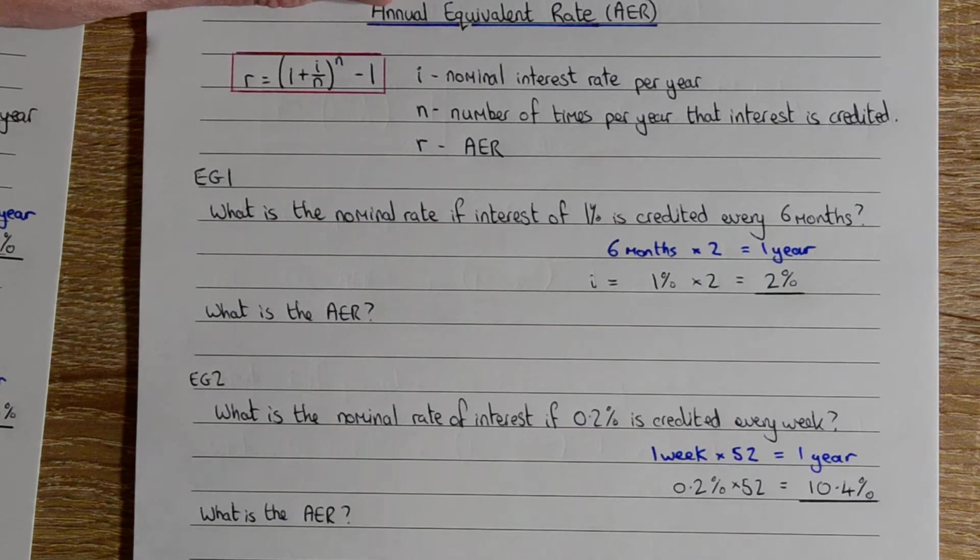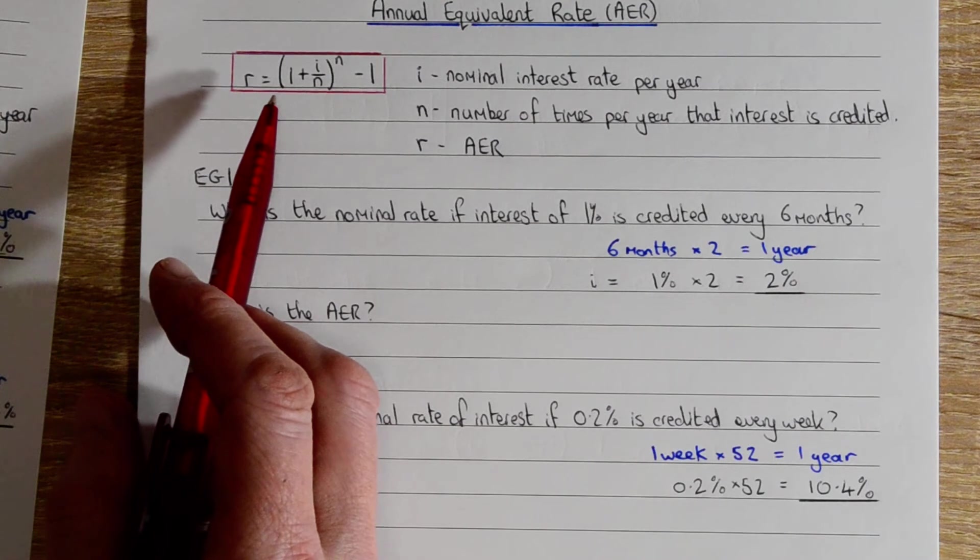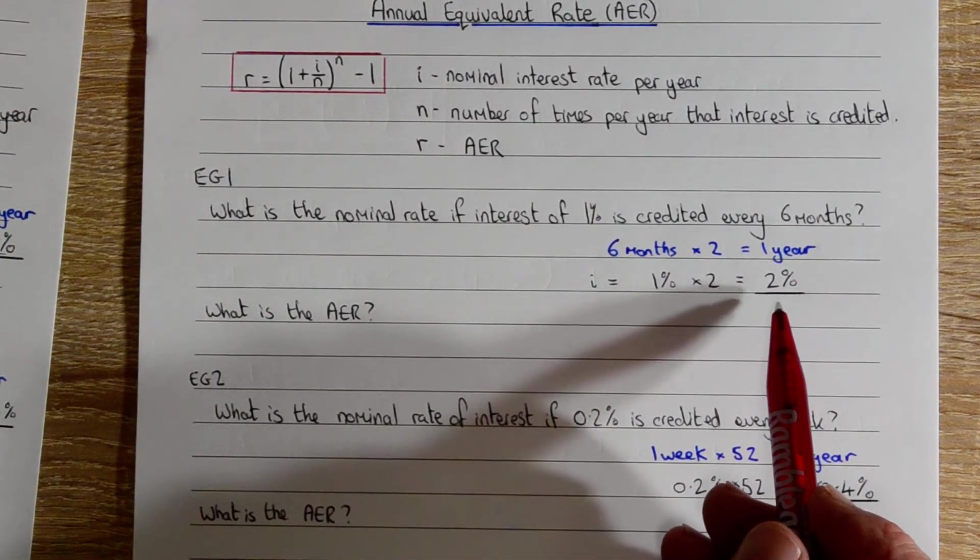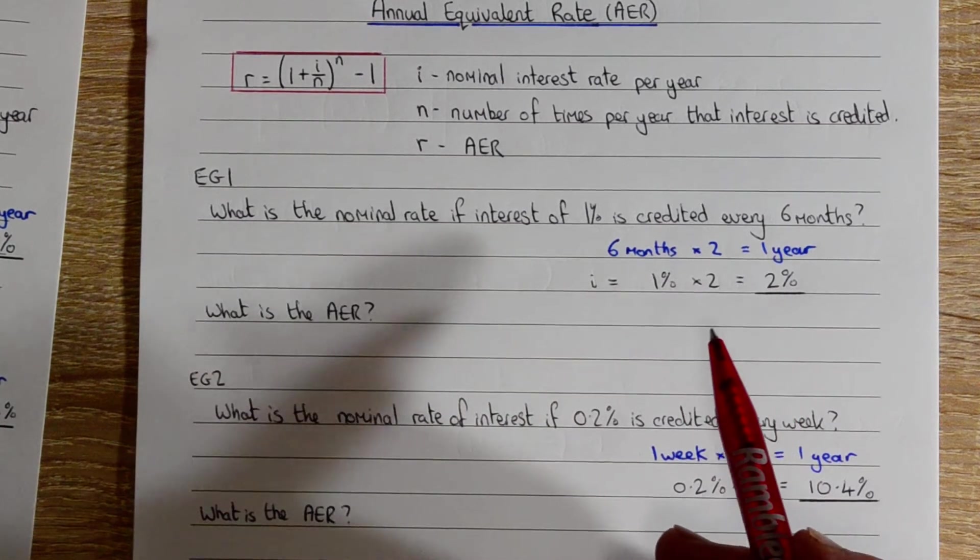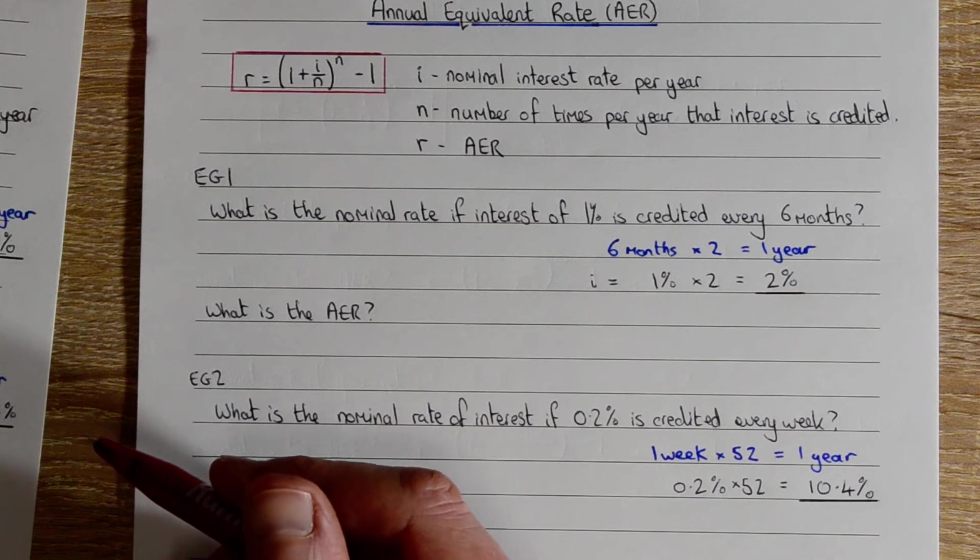Let's go on now and find the annual equivalent rate. What this formula does is it changes the nominal rate into the actual rate by taking into account the extra interest that is earned during the course of the year.